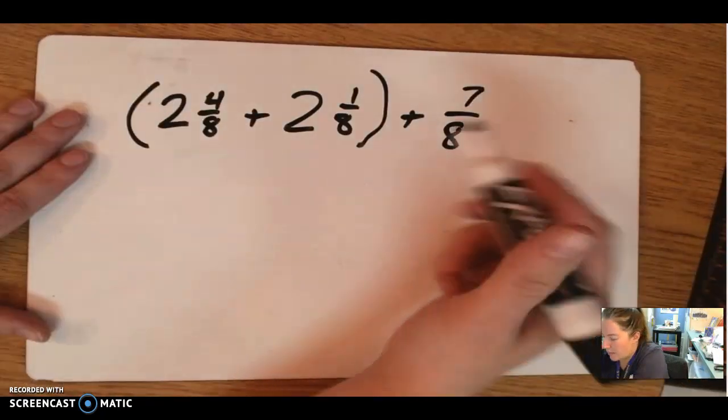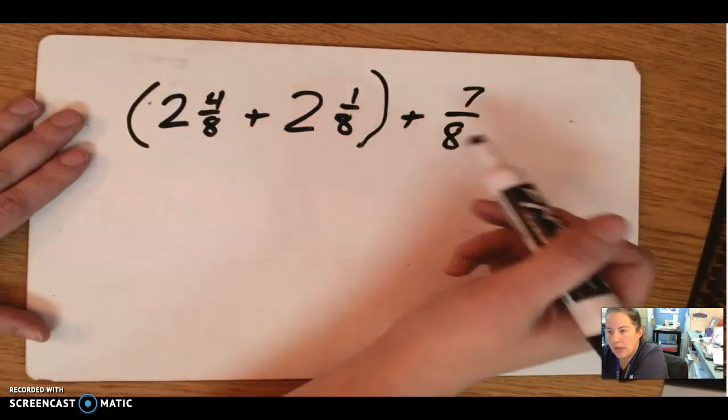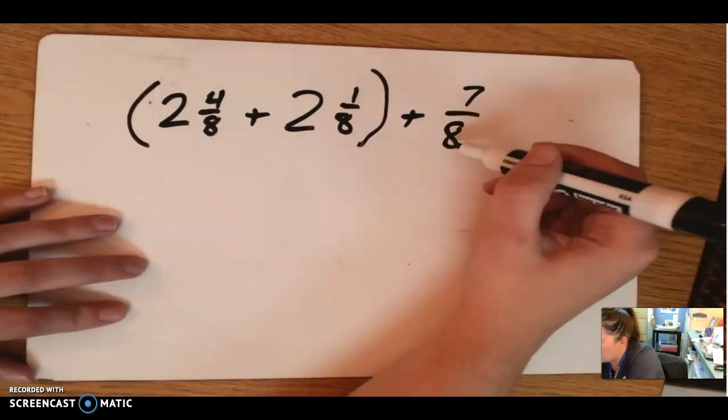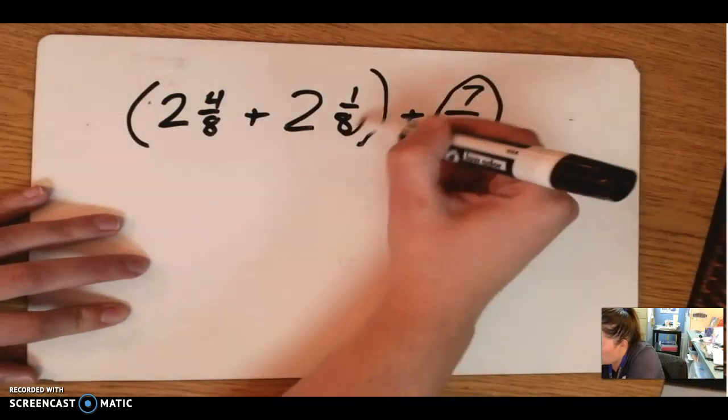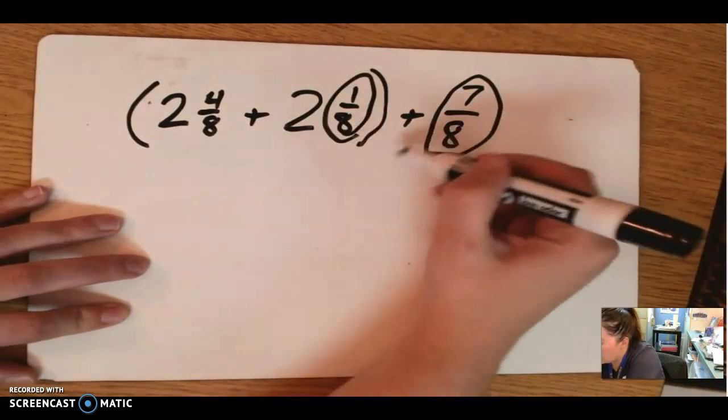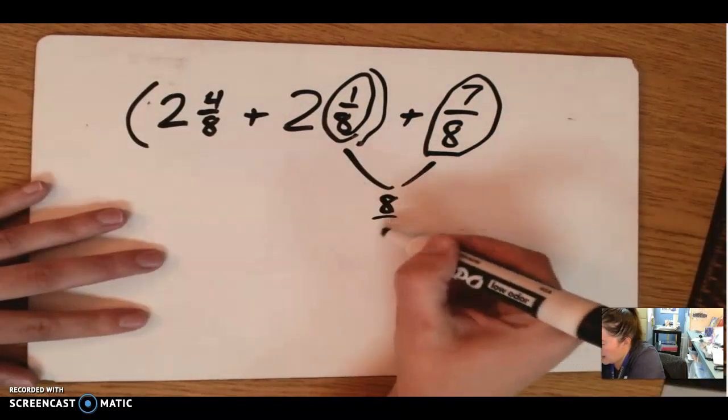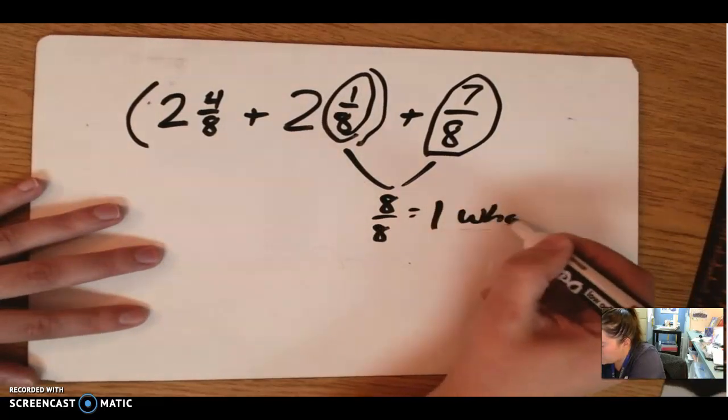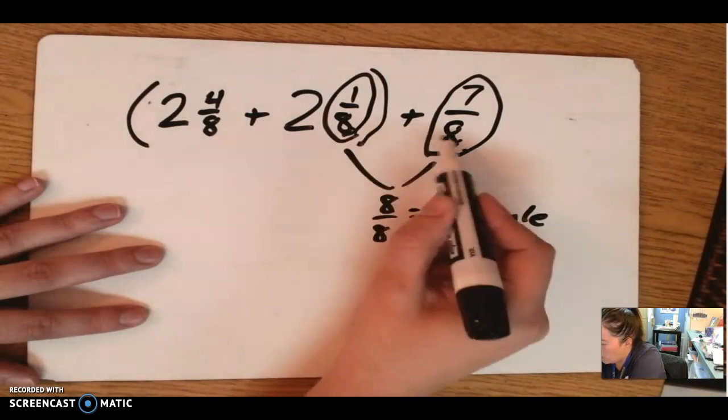Look at this problem. We have 2 and 4 eighths plus 2 and 1 eighths plus 7 eighths. Now I'm going to look at this 7 eighths who's out here because, look, I notice that 7 eighths and 1 eighths, if I combine those together, 7 eighths and 1 eighths would be 8 eighths, which is the same as 1 whole.